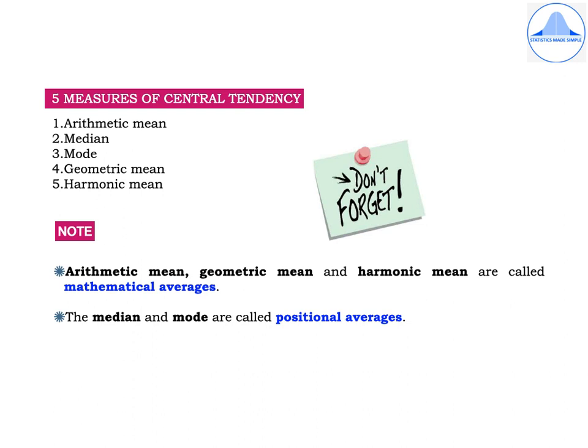These five measures are important so don't forget them. Now the arithmetic mean, geometric mean and harmonic mean are called as mathematical averages as they can be calculated using only a mathematical formula whereas the median and mode are called positional averages